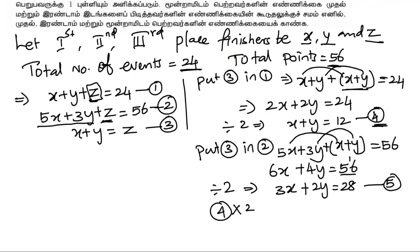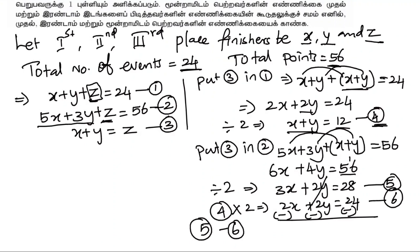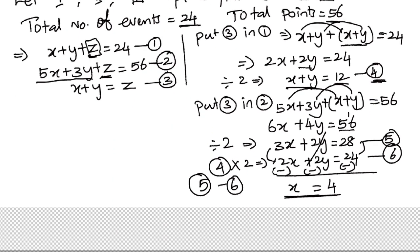From equations 5 and 6, we can eliminate variables. Symbol changes here: plus 2y minus 2y cancels. 3x minus 2x gives x equals 4. Put x equals 4 in equation 4.